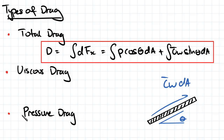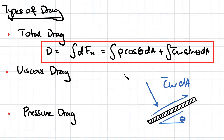The next type of drag is pressure drag. That's essentially associated with the pressure caused by the resistance as a fluid hits a surface normally. So that's going to be related to our pressure and area.